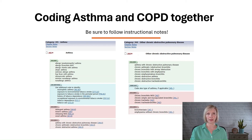Examples of specific types of asthma include mild intermittent asthma, mild, moderate, or severe persistent asthma, exercise-induced asthma, and cough-variant asthma.